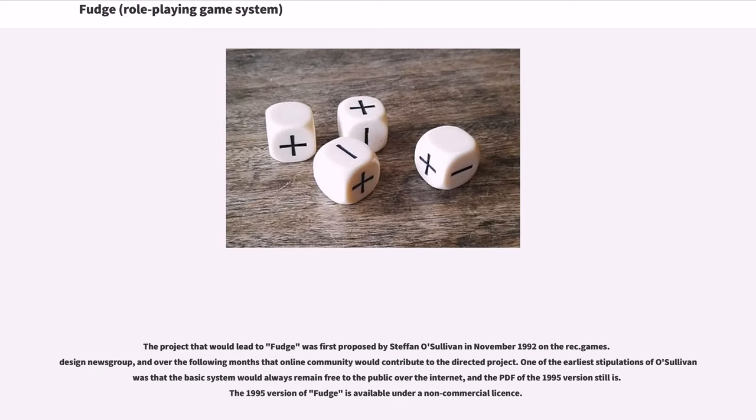The project that would lead to Fudge was first proposed by Stefan O'Sullivan in November 1992 on the rec.games.design newsgroup, and over the following months that online community contributed to the project. One of O'Sullivan's earliest stipulations was that the basic system would always remain free to the public over the internet. The PDF of the 1995 version still is, available under a non-commercial license.